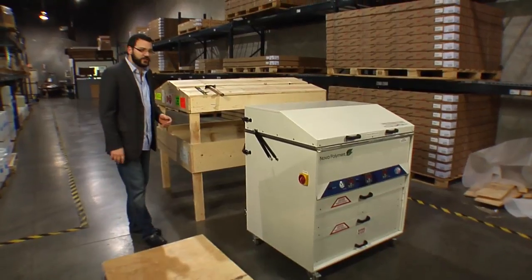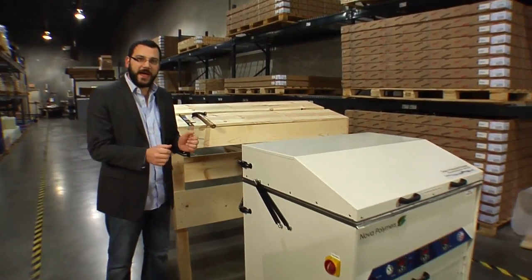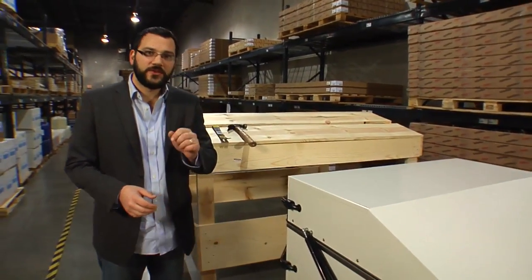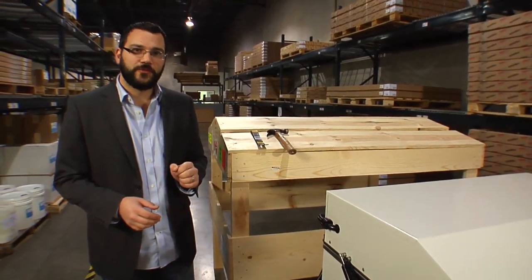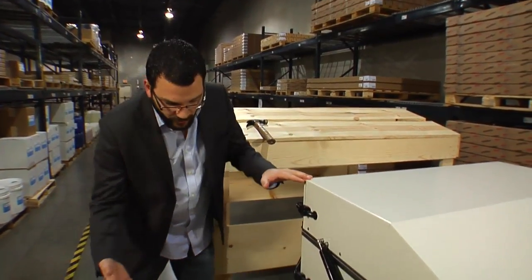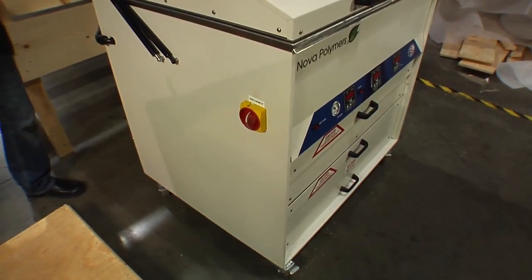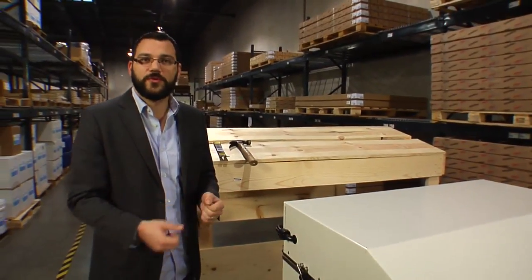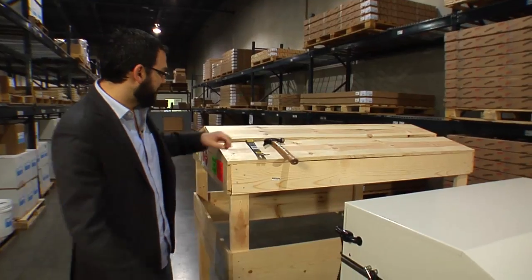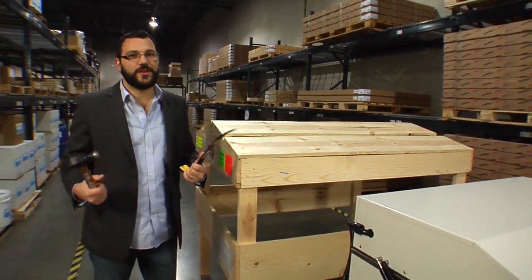Now we've got everything unpackaged. The processor's been taken off the pallet and unwrapped. One thing to note, when we take the processor off with the fork truck, make sure that we run the forks all the way underneath the processor so when we lift it up, the end of the forks don't poke through the bottom of the machine. Now we move on to the final step, which is uncrating the brush.